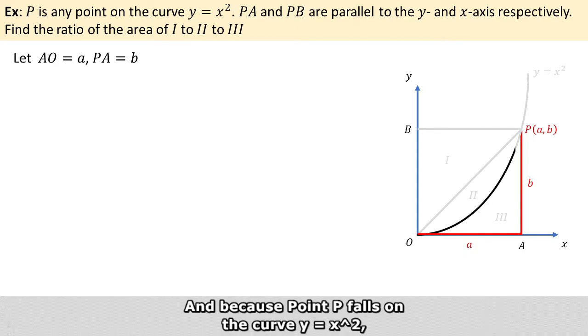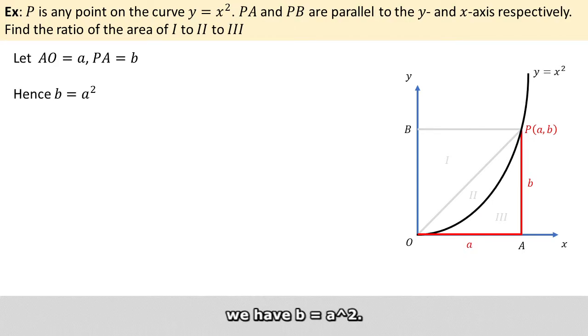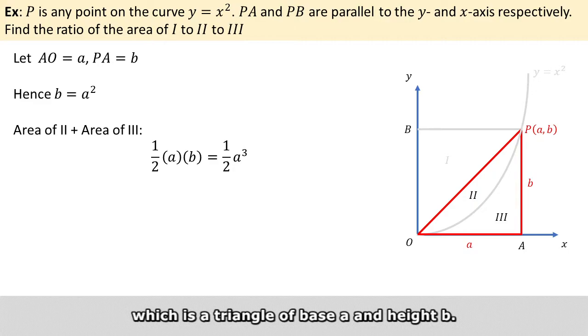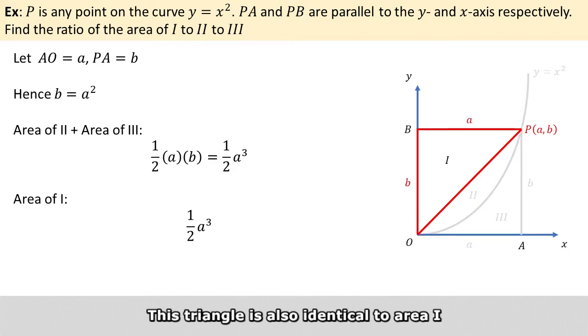Because point P falls on the curve y = x², we have b = a². Hence, we can obtain the combined area of regions 2 and 3, which is a triangle of base a and height b. This triangle is also identical to area 1 because AOBP is a rectangle. So now we just need to figure out either area 2 or area 3.